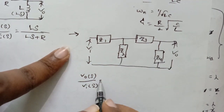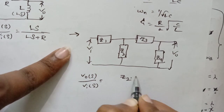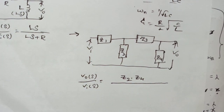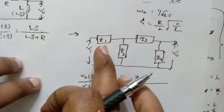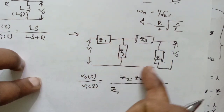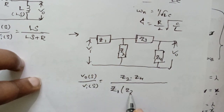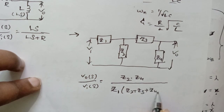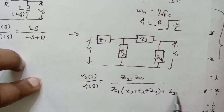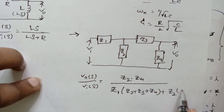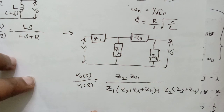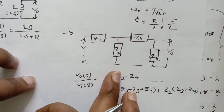Follow this simple step: see what are the shunt elements here — Z2 and Z4. So I will be writing Z2 times Z4 in the numerator. Now, come from the left side: Z1 and the sum of all remaining impedances Z2 + Z3 + Z4. Next element is Z2, and the remaining right-side elements are Z3 + Z4. This is the complete transfer function for this network.